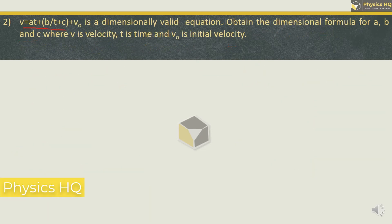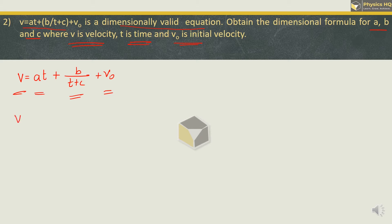Now we have an equation: v = at + b/(t + c) + v₀. It is a dimensionally valid equation and you have to obtain the dimensional formula for a, b, and c. They have given that v is velocity, t is time, and v₀ is initial velocity. Always remember all the terms in such an equation will have the same dimensions. Velocity has dimension L¹T⁻¹, and so does the term 'at'. Since t has dimensions of time, we can write the dimension of a as L¹T⁻¹ divided by T, which gives L¹T⁻².